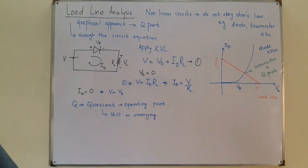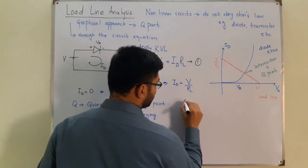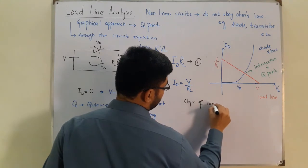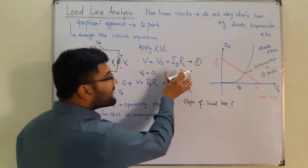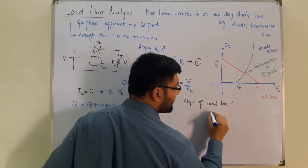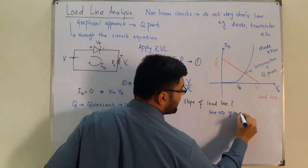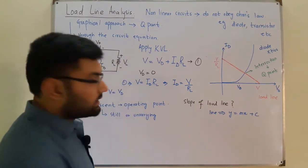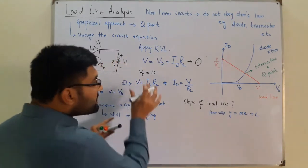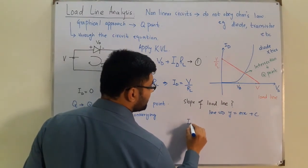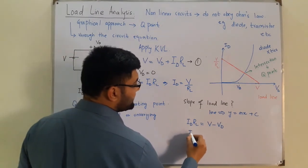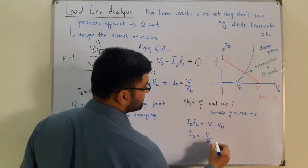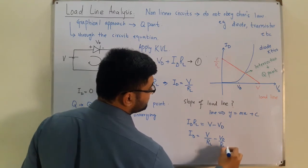Now let's find the slope of the load line. The circuit equation is V = VD + ID × RL. Rearranging in the form y = mx + c: ID × RL = V − VD, so ID = V/RL − VD/RL.